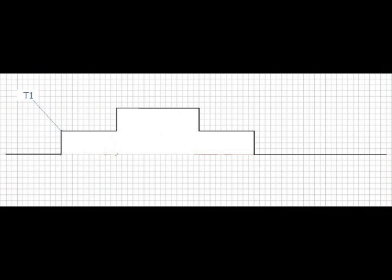At time T1, the scope sees the rising edge of the incident pulse. At time T2, the pulse has already traveled to the end of the cable, but the scope still only sees the incident pulse.